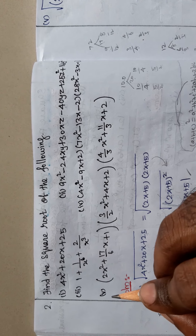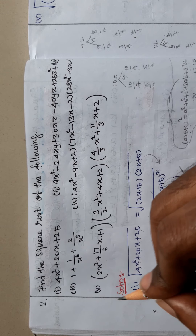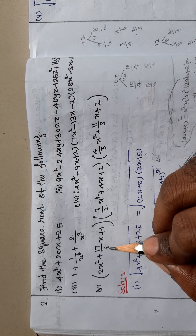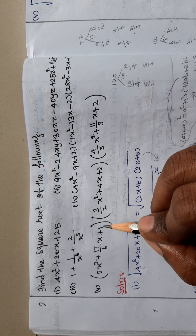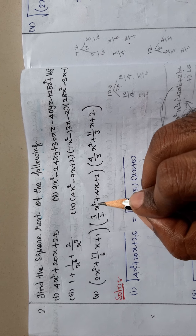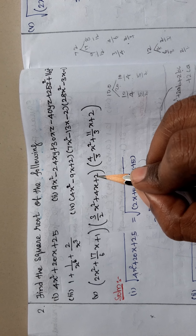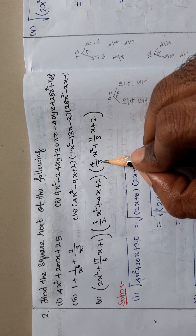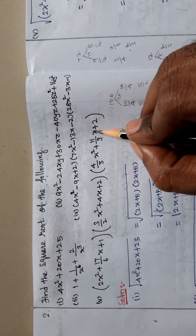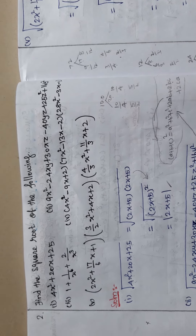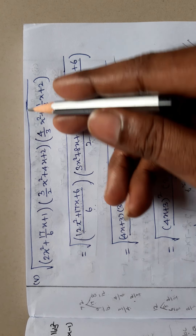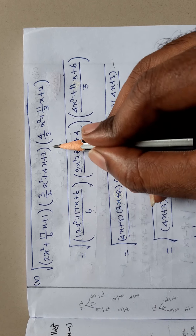Question number 2, 5th subdivision. The expression is: 2x squared plus 17 over 6x plus 1, into 3 over 2x squared plus 4x plus 2, into 4 over 3x squared plus 11 over 3x plus 2. Find the square root of the given expression.